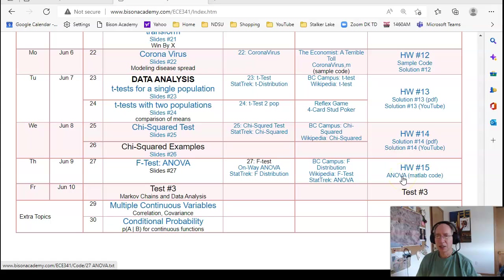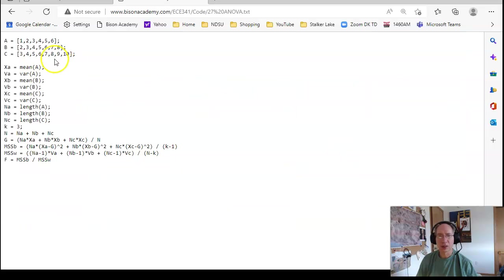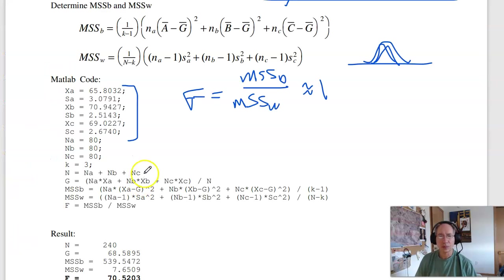Here it is: the analysis of variance MATLAB code. Given three different data sets, replace them with the actual data, or if you have the mean and variance, just input them right here. The code calculates the total population, the global mean, the mean sum squared difference between columns relative to the global mean, mean sum squared within columns, then takes the ratio. That's your F-score.